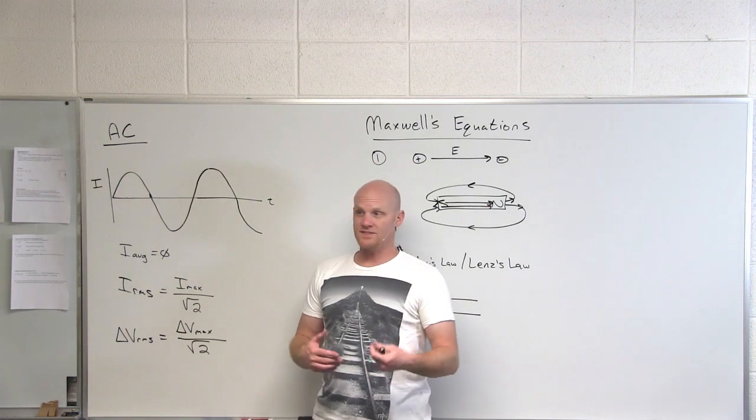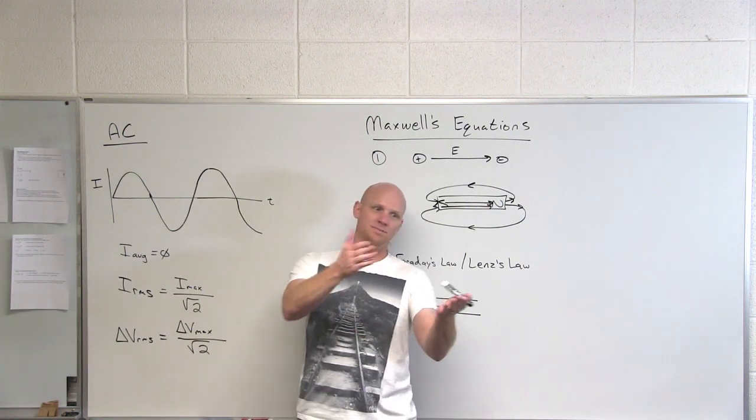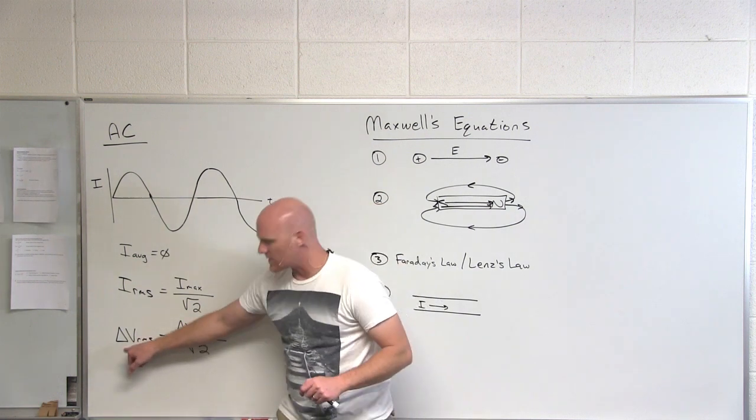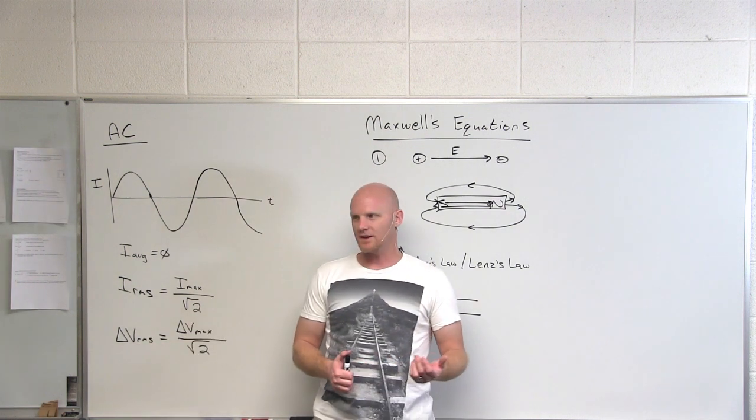And so you find out that you actually have potential differences that end up being peak values higher, and it's about 170 if you work it out. So if you want to know that max, you just multiply it by square root of two times 120 volts, and you get it there. Sweet.